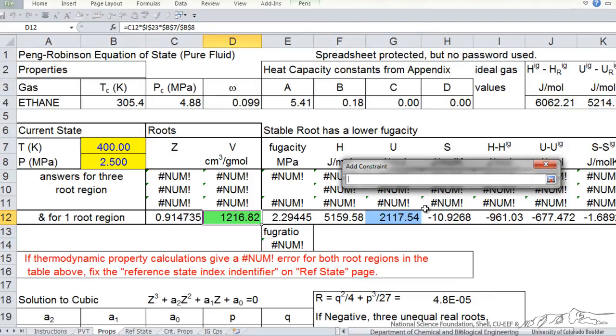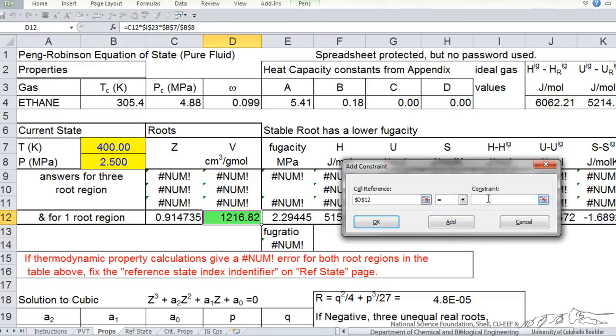I am going to put in my constraint, which is this value, and I am going to make it equal to, and I will hit ok.